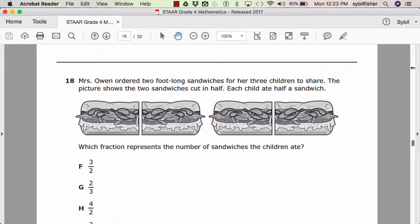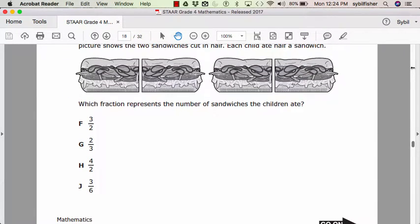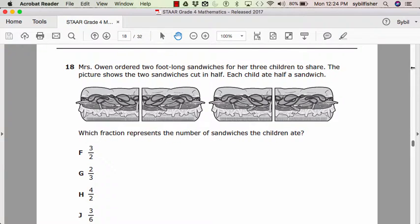Number eighteen. Mrs. Owen ordered two foot-long sandwiches for her three children to share. The picture shows the two sandwiches cut in half. Each child ate half a sandwich. Which fraction represents the number of sandwiches the children ate?